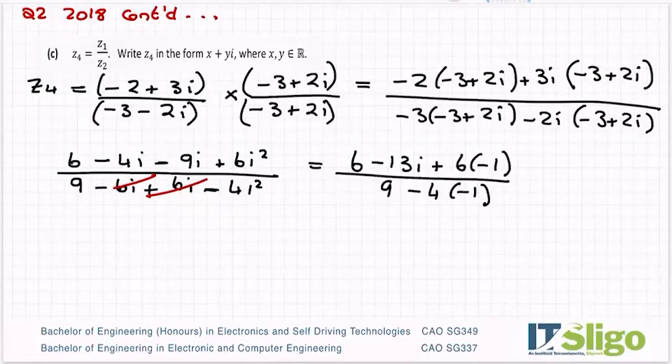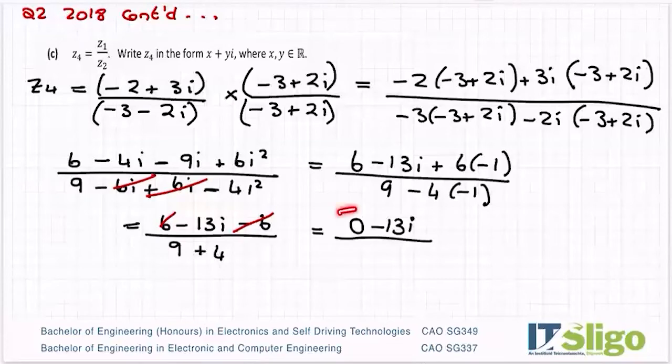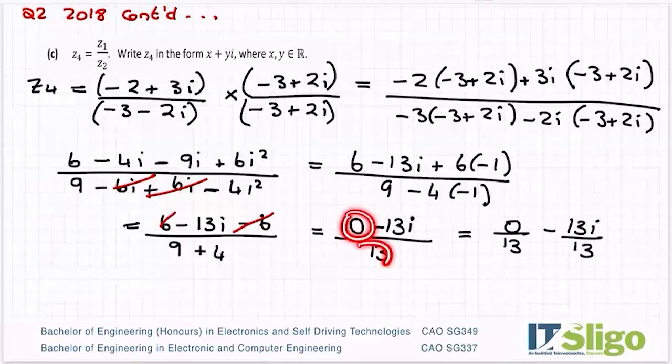OK. So then I have 6 minus 13i plus 6 times minus 1. So plus by minus is a minus. And on the bottom, I have 9 minus by minus is a plus 4. So 6 minus 6 cancels. So I have 0 minus 13i. And note that the real part always gets written first. OK. Over 13. OK. And how you simplify it is the real part goes over the 13 minus 13i over 13. OK. So you break it up and you put each bit over the 13. So 0 over 13 is 0 minus 13 over 13 is 1, or i. So that's it in the form x plus yi.